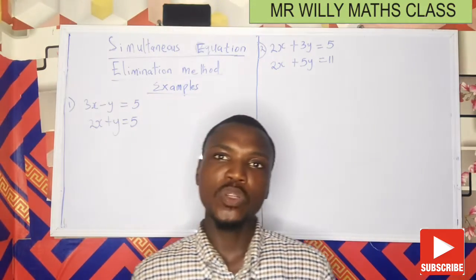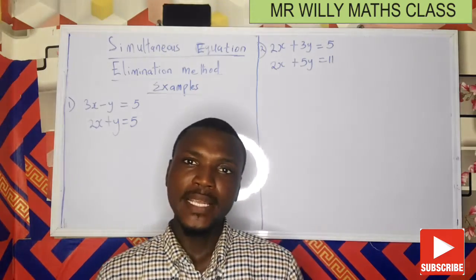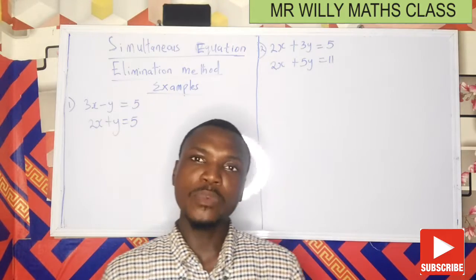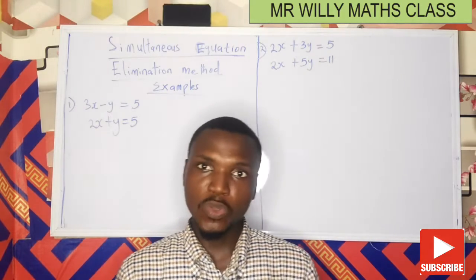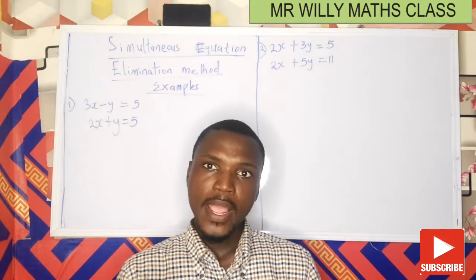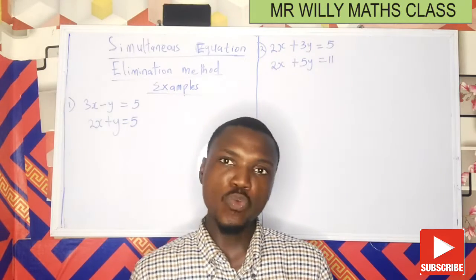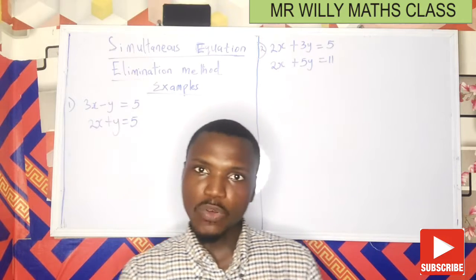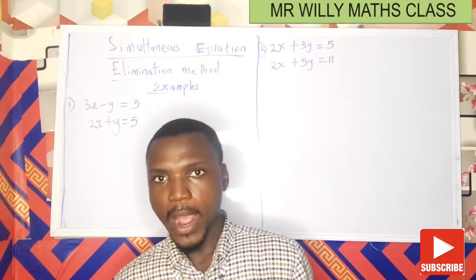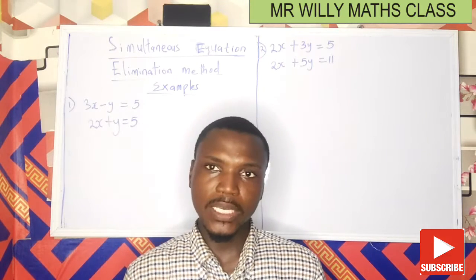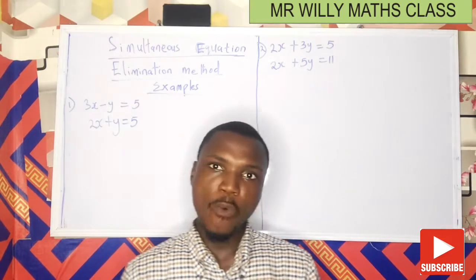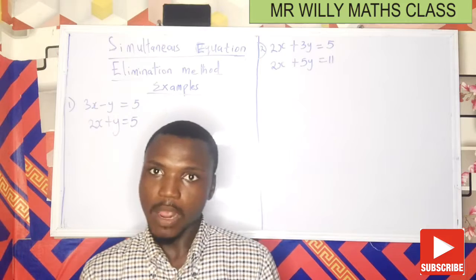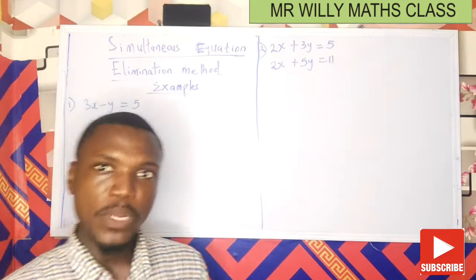The elimination method revolves around getting rid of one of the variables, then you solve for the remaining variable. For example, if you have two equations and you need to solve for x and y, your target could be to get rid of y and then solve for x, or get rid of x and solve for y. Pay attention and you'll see how it works.